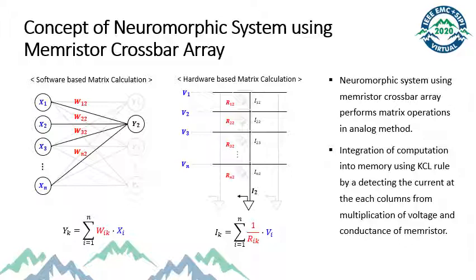Conventional digital logic system takes data from off-chip memory and calculates the input and weight as a software-based method. On the other hand, matrix calculation can be done directly by detecting a current at each column from multiplication of voltage and conductance of memristor using KCL. This kind of analog-based calculations are hundreds to thousands of times more energy efficient than traditional digital logic method.